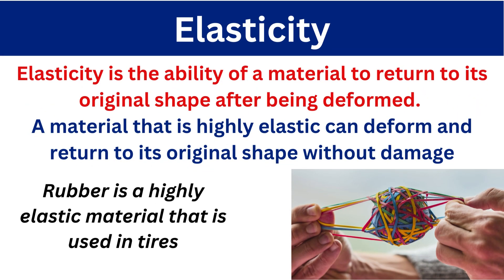Next is elasticity. Elasticity is the ability of a material to return to its original shape after being deformed. When we apply a load it will deform, and once you release the force, it will regain its original shape. A material that is highly elastic can deform and return to its original shape without damage. Rubber is the best example of elasticity — it is a highly elastic material used in tires.